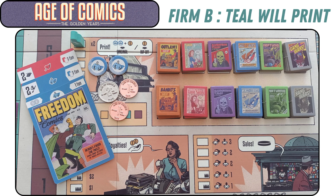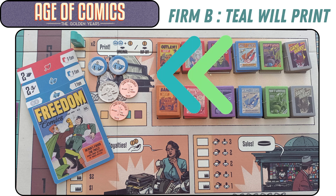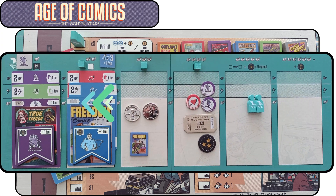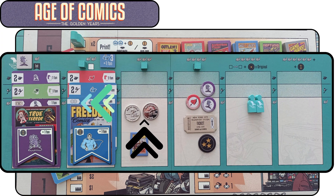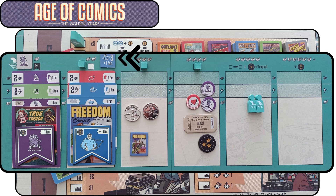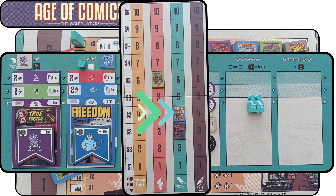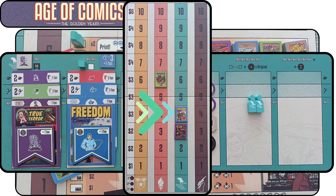Firm B — Teal — will print, paying two idea tokens and four dollars for their original superhero comic. They collect the bonus of four dollars, and since they satisfy the sales order tile condition, they gain one fan plus one fan for a specialized artist, one fan for their printed comic, and one fan for gaining the mastery token — four fans total for the fan track.